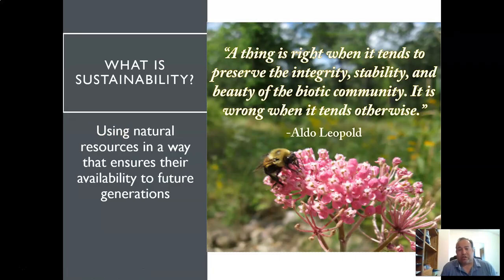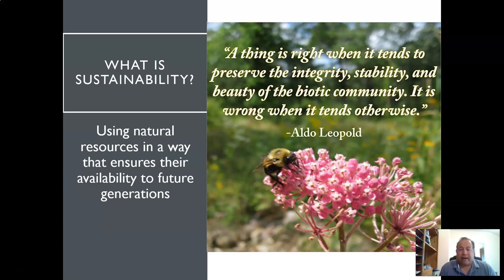One of the ways we're going to try to do that is through the term sustainability. You're going to see quotations from Aldo Leopold, who is a naturalist and a great figure in the natural resources community. He said: 'A thing is right when it tends to preserve the integrity, stability, and beauty of the biotic community. It is wrong when it tends otherwise.' He's saying: use natural resources in a way that ensures their availability to future generations — preserve the integrity, stability, and beauty of the living environment for generations upon generations.